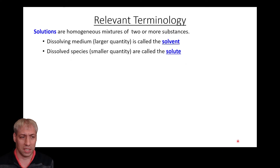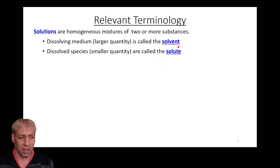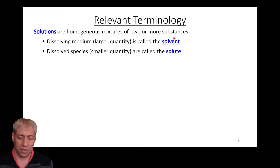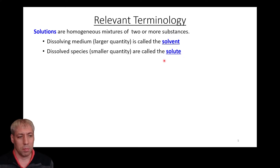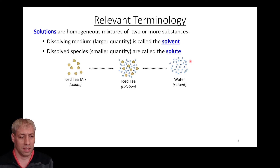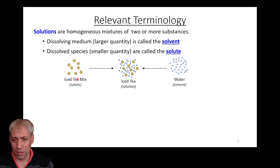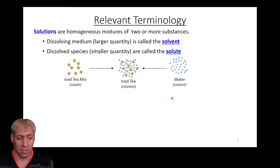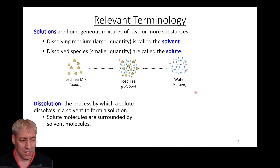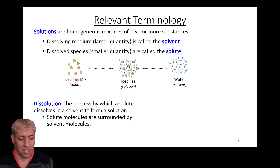A solution doesn't mean it's liquid — it just means you have two components homogeneously mixed together. It takes two things to make a solution: a solvent and a solute. A solvent is the dissolving medium — basically the component in larger quantity — and a solute is the thing that dissolves in it. Generally, there's a lot of solvent and a small amount of solute. Here's a visual example: take some iced tea mix as the solute, put it in water (the solvent), and you have a solution of iced tea.